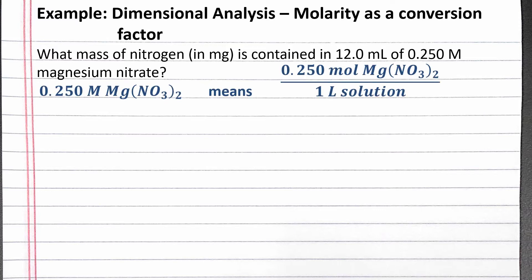0.25 molar magnesium nitrate means 0.25 moles of magnesium nitrate per liter of solution. Since this is a ratio of units, we can use it as a conversion factor, just as we would density as a conversion factor. From our molarity, we know 0.25 moles of magnesium nitrate equals 1 liter of magnesium nitrate solution.